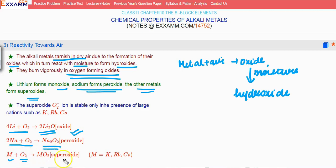And the other metals form the superoxide. So the superoxide O2- ion is quite stable only in the presence of large cations, that is potassium, rubidium, or cesium. So the superoxide that forms is stable only with these large cations.